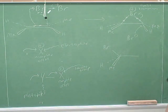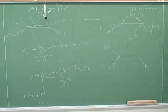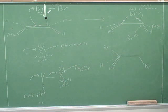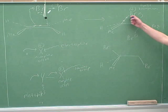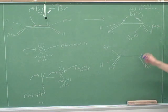The other bromine is coming in from below. Would we expect it to come in from above or below? Below — because of steric hindrance. The first bromine is blocking the top side, so it makes sense for the second bromine to come in from below. Since the bromine is coming in from below, it should push these substituents up. There's approximately a 109.5 degree angle between the hydrogen, the methyl, and the bromine.